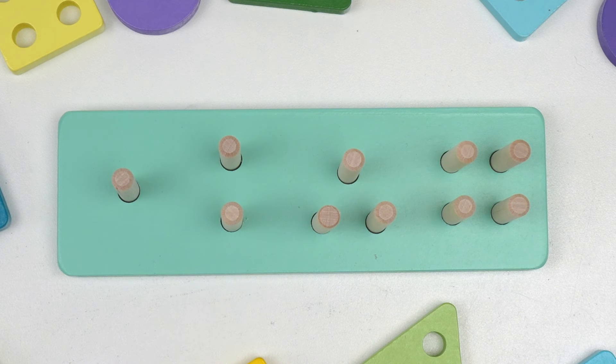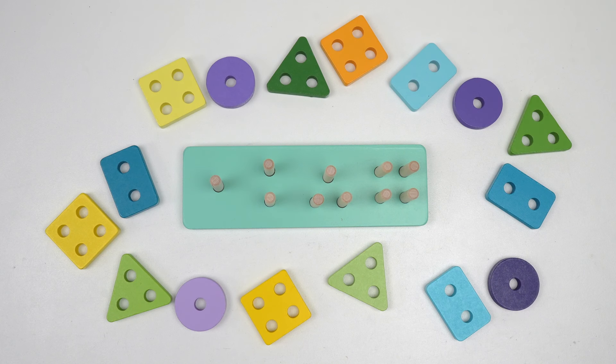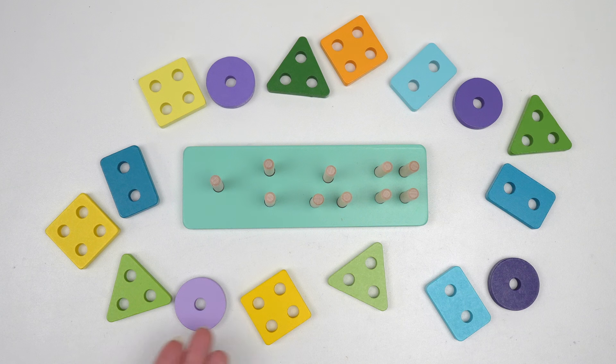Let's start here. How many pegs are there? That's right, there's one peg, so we need to find a shape that has one hole. Do you see a shape with one hole?